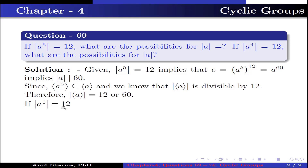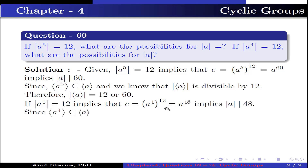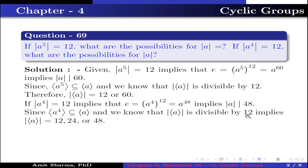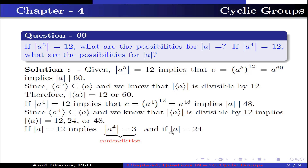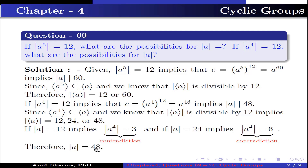If order of a to the power 4 is 12, this implies a^(4×12) = a^48 is equal to identity. Since the group generated by a^4 is contained in the group generated by a, and order of the group generated by a is divisible by 12, this implies order of a is 12, 24, or 48. If order of a is 12, order of a^4 is 3 — contradiction. If order of a is 24, order of a^4 is 6 — contradiction. Therefore order of a is 48.